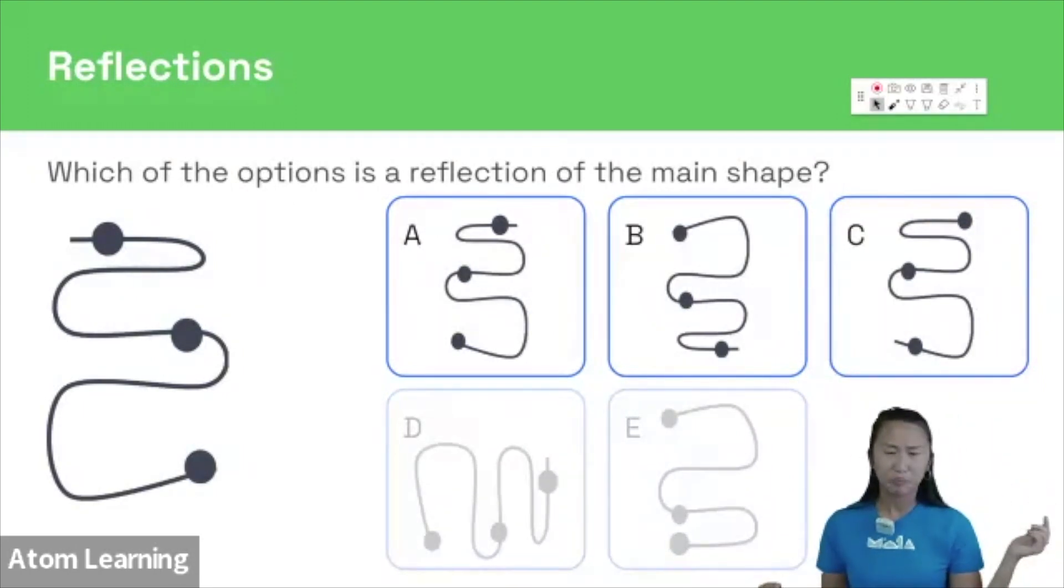Gotten rid of options D and E. Why? Well, if we look at E, we can see that the line only has three bends, whereas the line in the main shape has four. Next, if we look at D, we can see it's actually a rotation of the main shape. It has been rotated rather than reflected. So you can also rule out D.